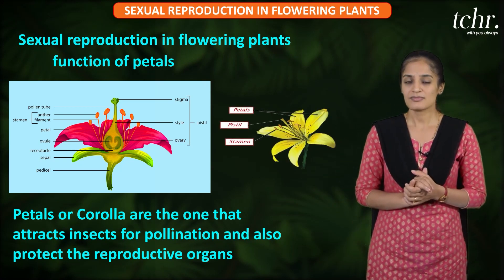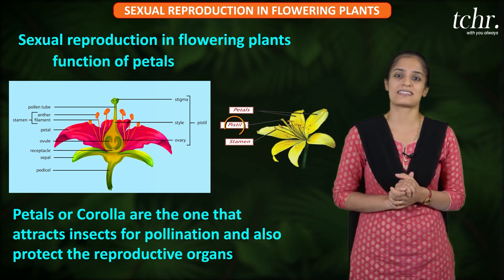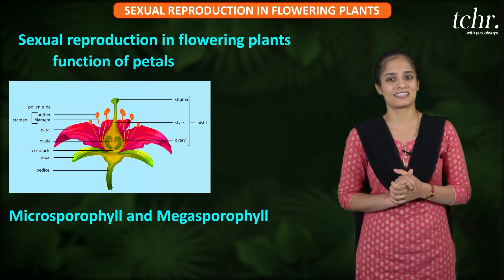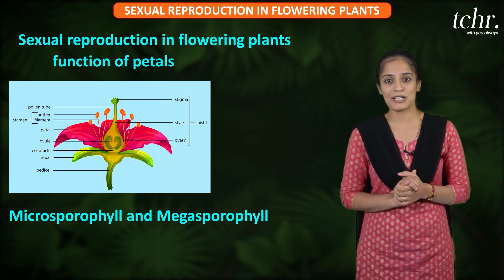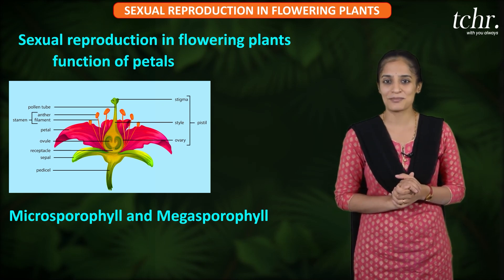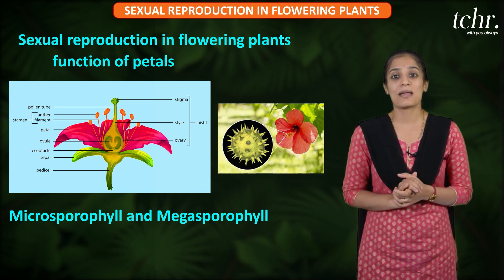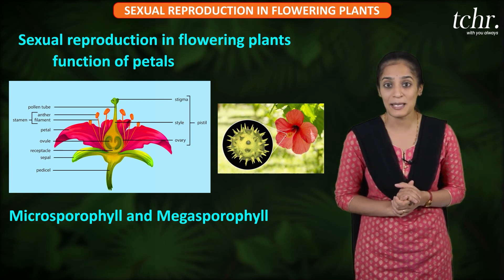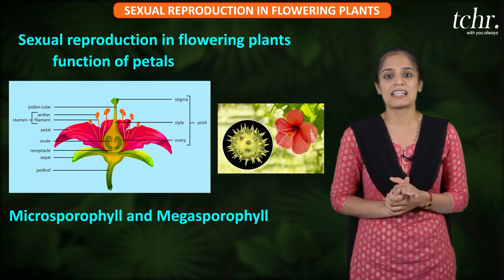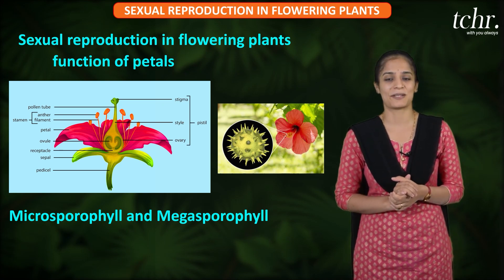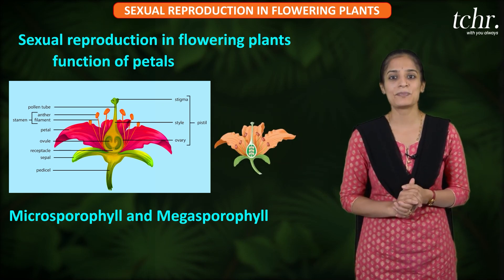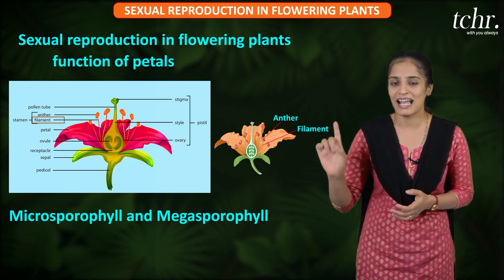Inside the flower you have stamen and pistil. Stamen is called microsporophyll because microspores — which are nothing but pollen grains — are formed in it. Pistil is called megasporophyll because it produces female gametes, or megaspores. Stamen has anther, filament, and connective tissue. Pistil has stigma, style, and ovary.